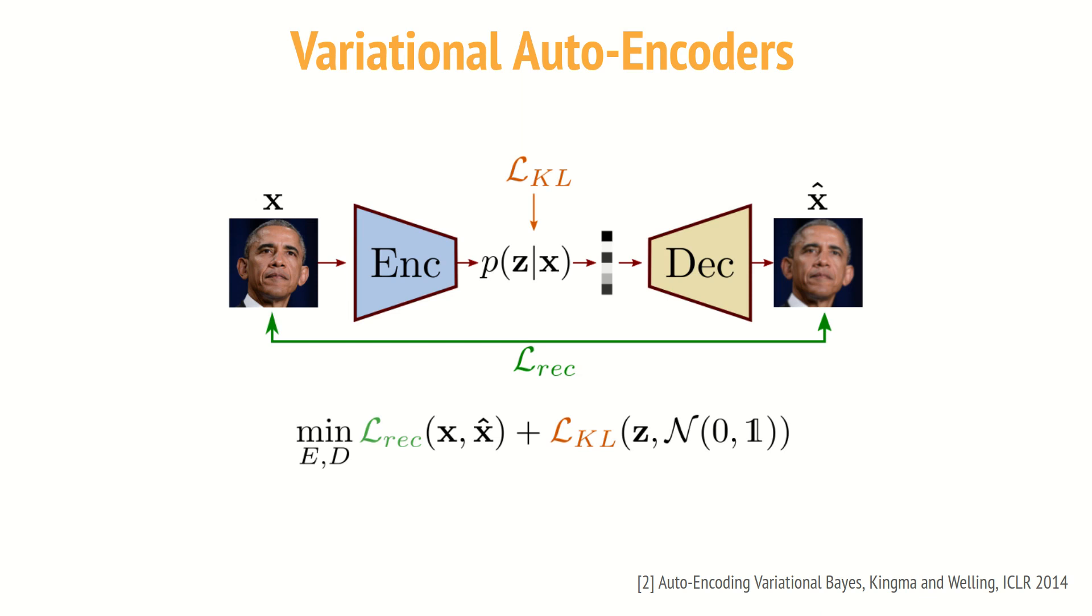First, the encoder does not predict only a single latent vector Z, but for an input image X, it predicts the distribution P of Z given X. Practically, this posterior distribution is assumed to be Gaussian, really often, and the encoder is equipped of two heads in order to predict the mean and the variance of this posterior distribution.